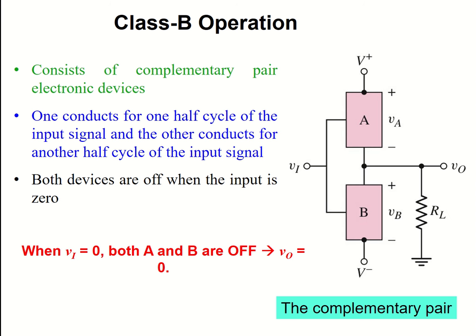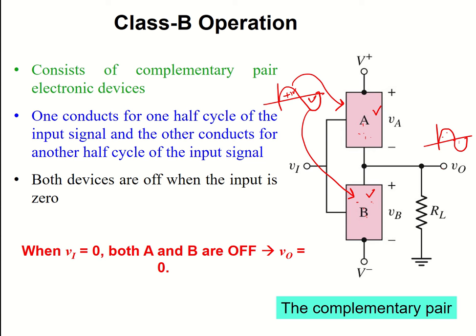In the actual Class B amplifier we have two transistors — one here and one here — and we call them a complementary pair, also known as a push-pull configuration. For the positive cycle, transistor A will be working and we get the positive output. For the negative cycle, transistor B will be working and we get the negative output. So we get both positive and negative cycles complete by using the complementary pair. Only one device is working at a time: if A is working then B is off, and if B is working then A is off.